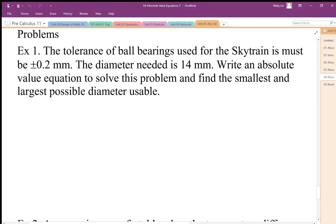We can set up equations using absolute value in problems such as this. The tolerance of ball bearings used for the SkyTrain must be plus or minus 0.2 millimeters. The diameter needed is going to be 14 millimeters.